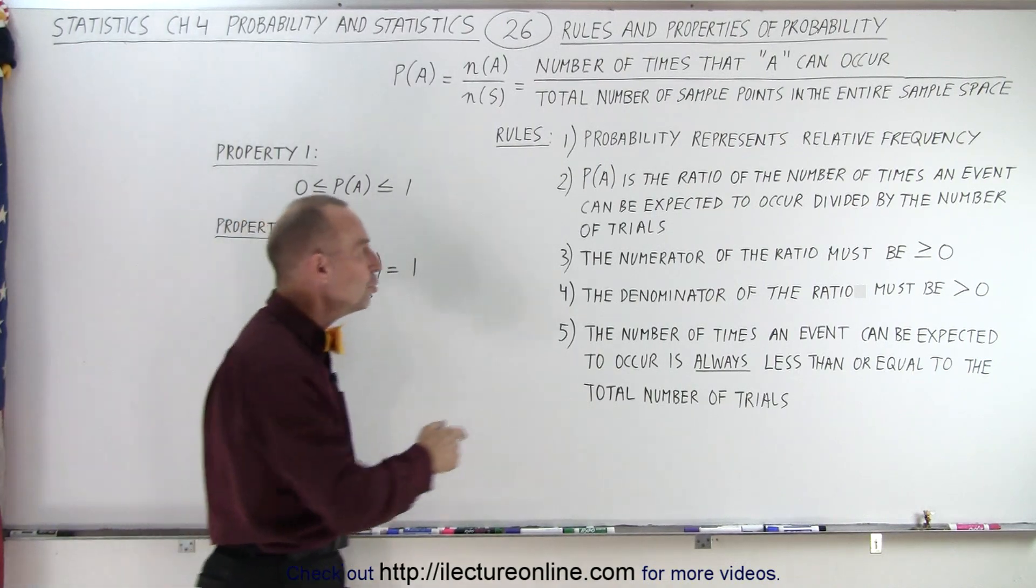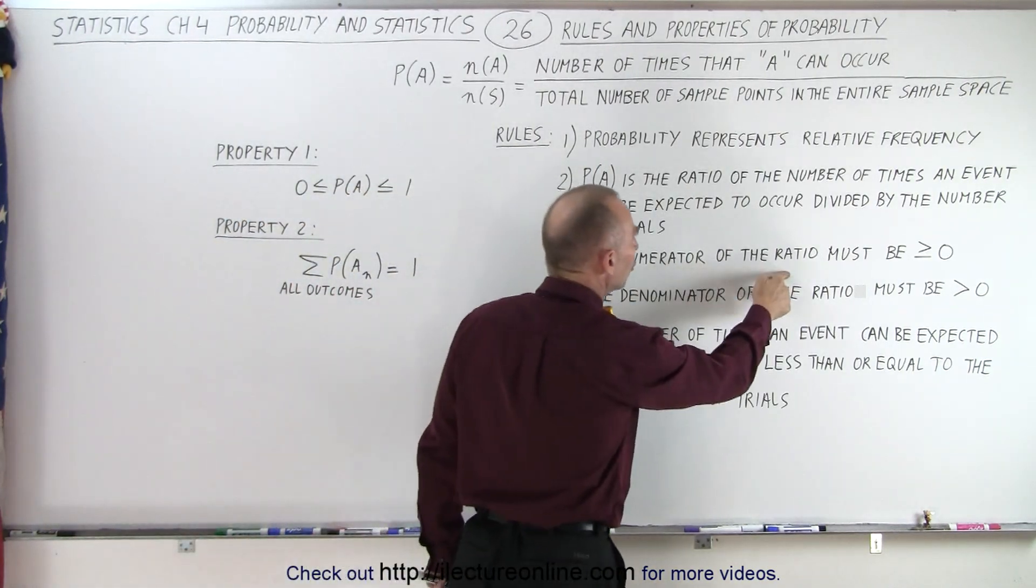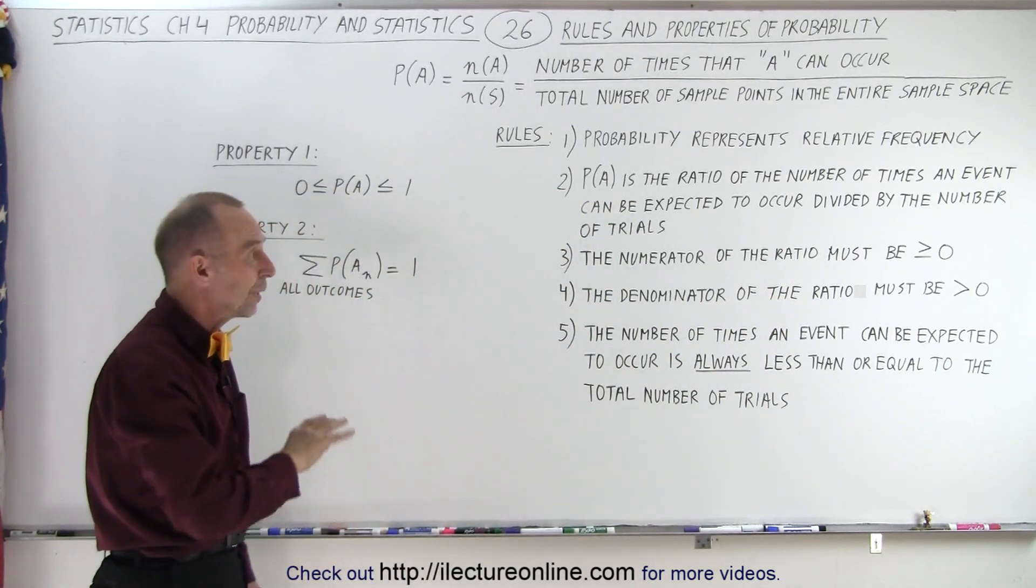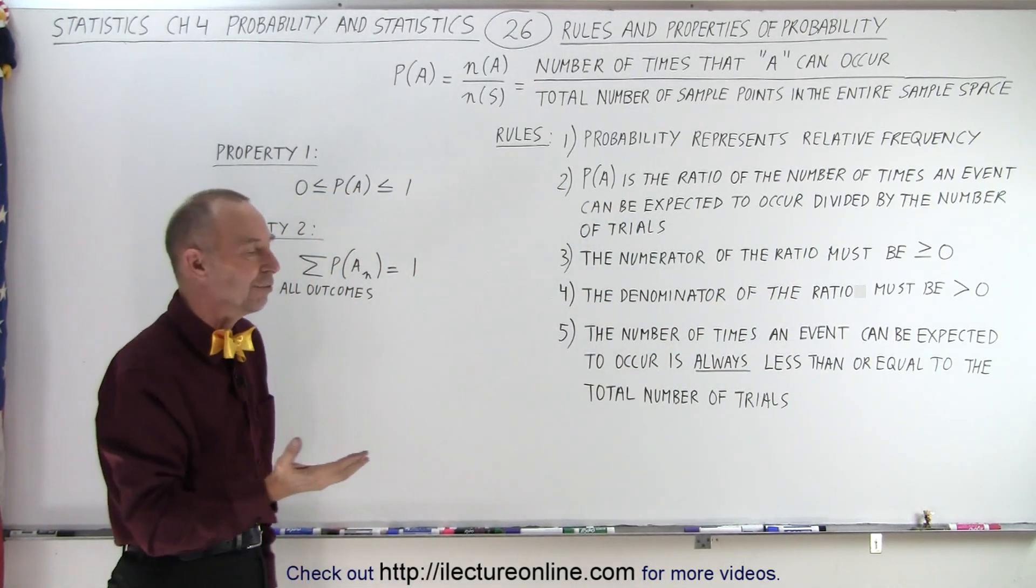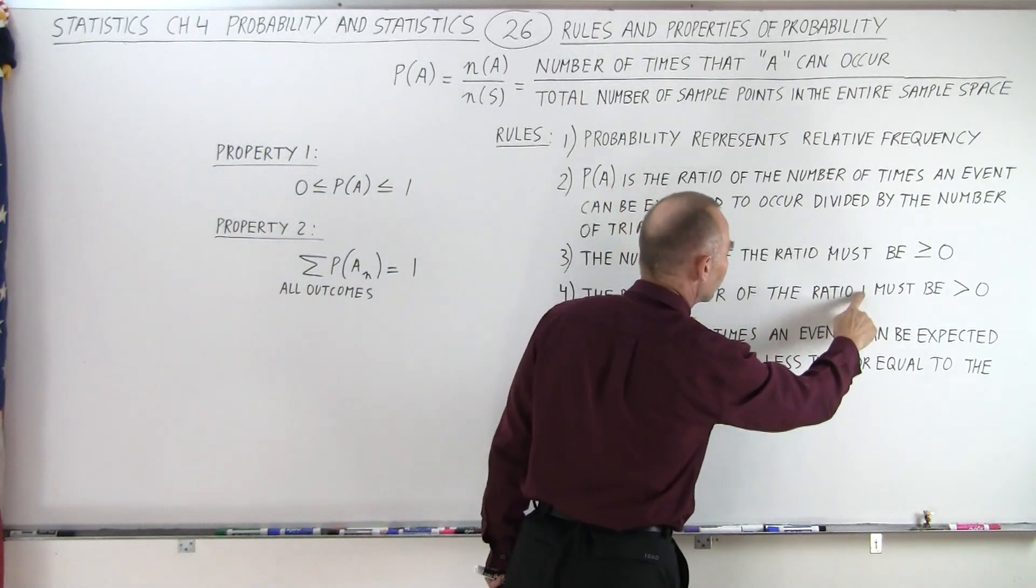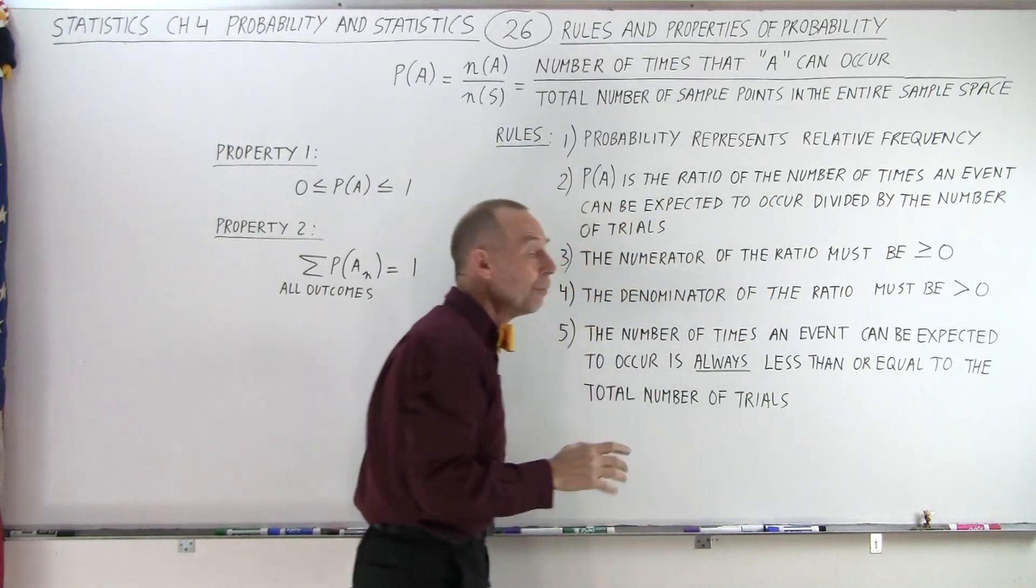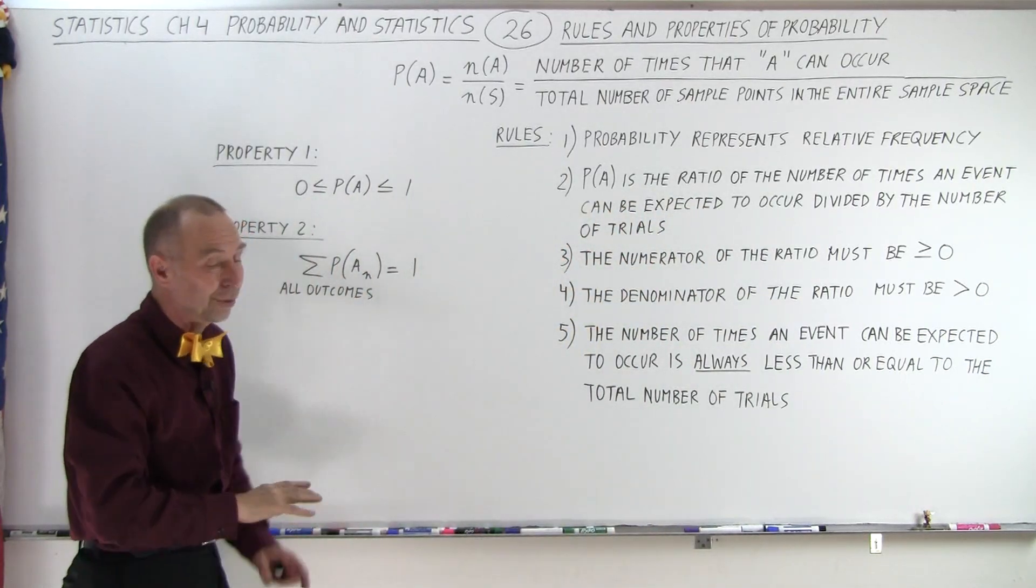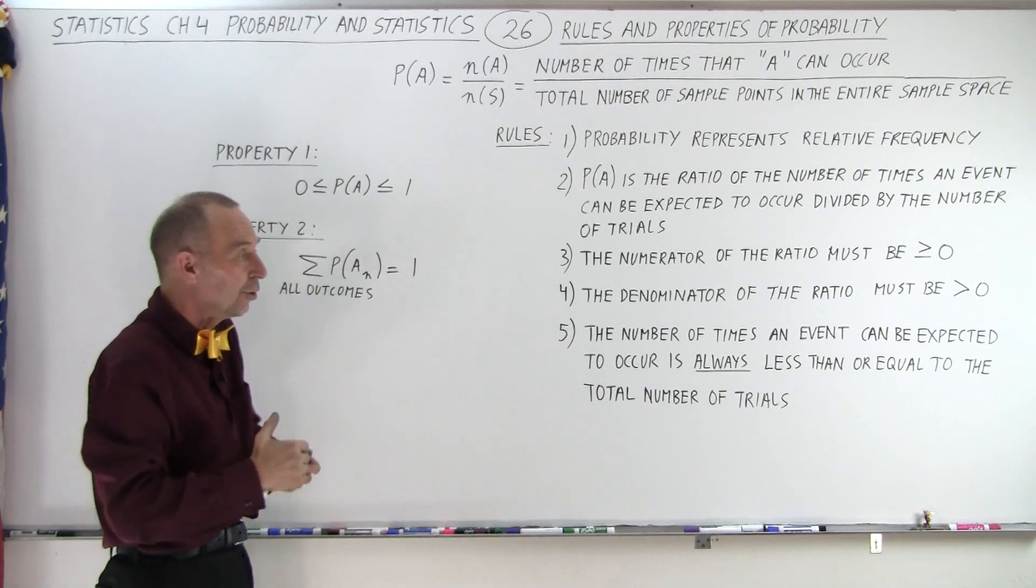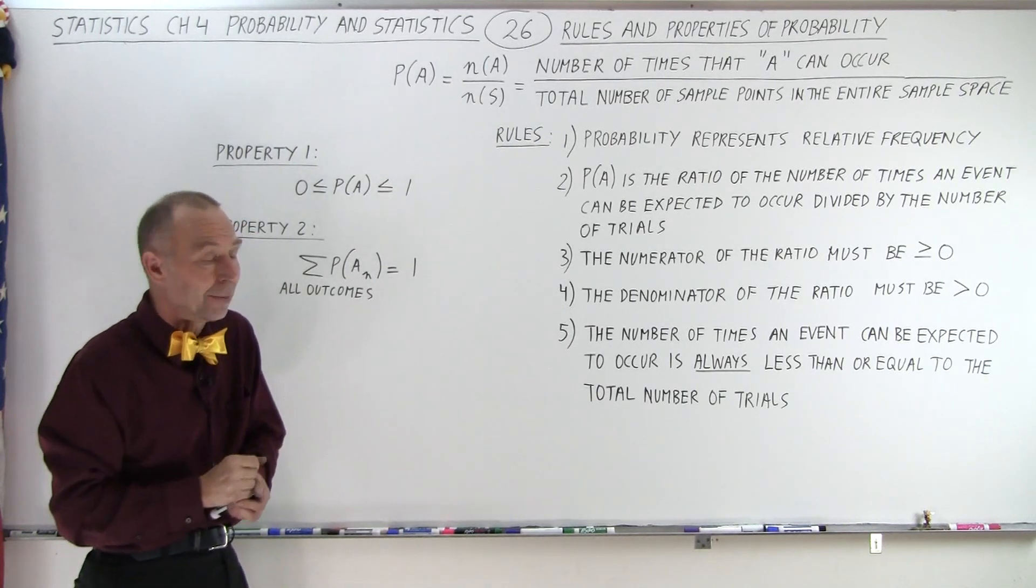Three, the numerator of the ratio must always be equal to or greater than zero. So we cannot expect any negative probabilities. The denominator of the ratio must be greater than zero. We can't have zero total number of trials, then we don't have any probability. You should have at least a one in the denominator.